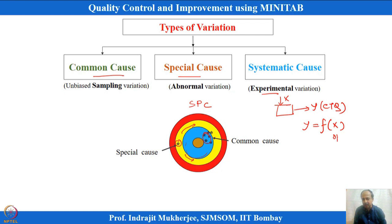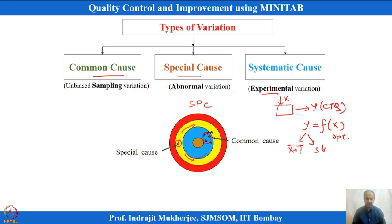By experimentation we determine optimal x conditions that give y hitting the target with minimum variation. Systematic or intentional variation is induced to understand the relationship between y and x — to model and optimize that relationship. This is known as Design of Experiment. So we have Statistical Process Control for the control part, and Design of Experiments for further improvement. The ultimate quality goal is systematic experimentation that sets the process, establishes standard operating practices, and controls them.